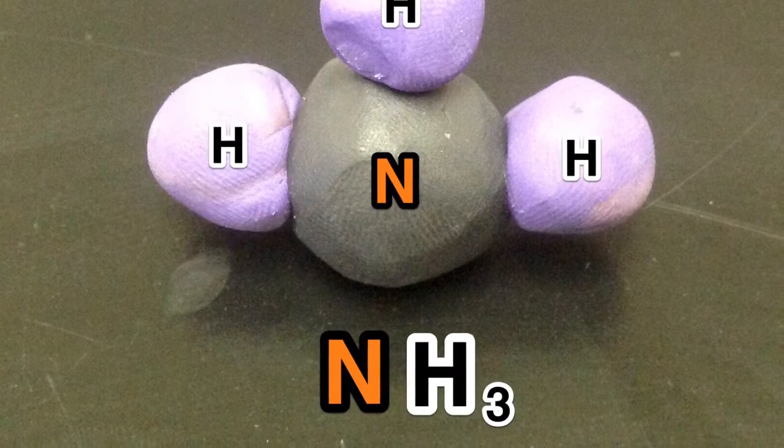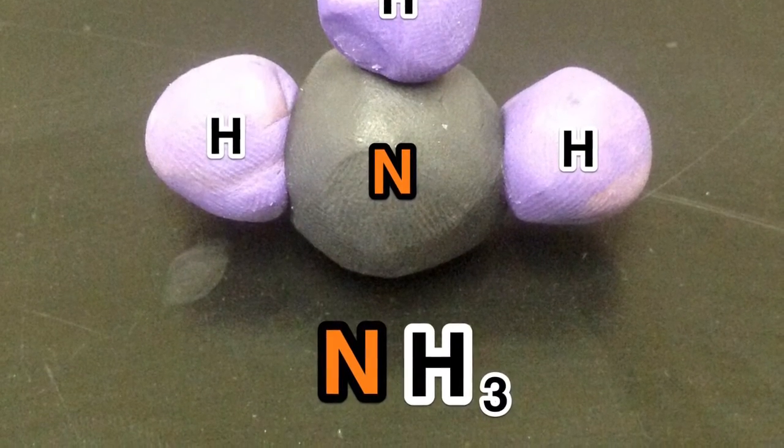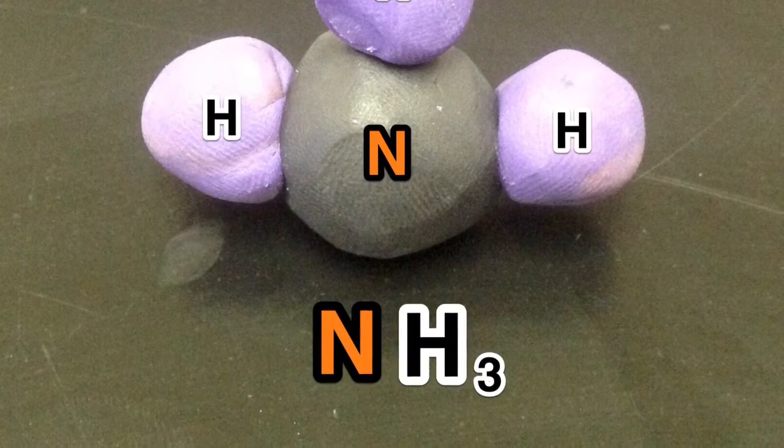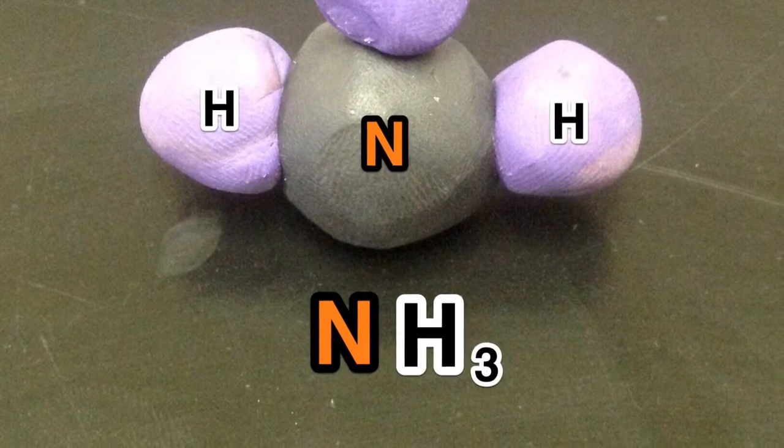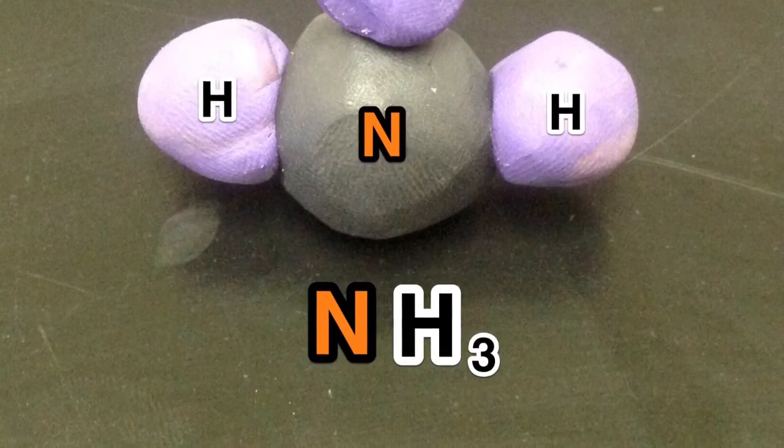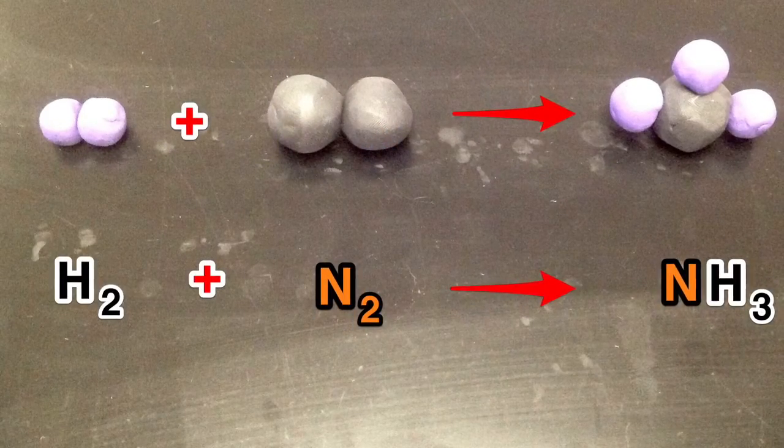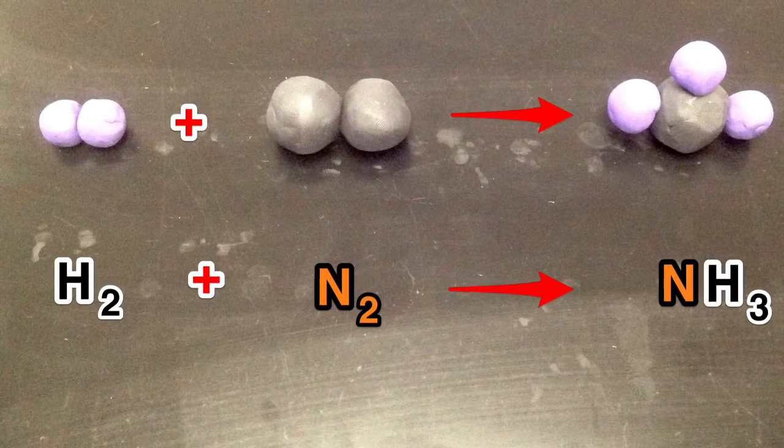Hydrogen and nitrogen will regroup as a molecule called ammonia, NH3, having one atom of nitrogen attached to three hydrogen atoms. So our equation now reads H2 plus N2 yields NH3.